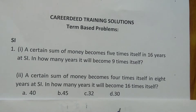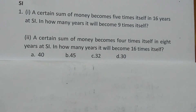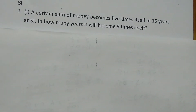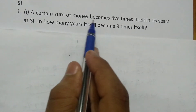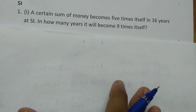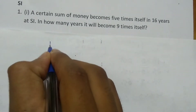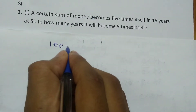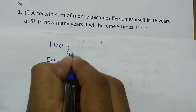I have the easiest way to solve this problem. Since you don't know how much was deposited, assume 100 rupees. This 100 rupees is becoming 5 times — that is 500 rupees — in 16 years.